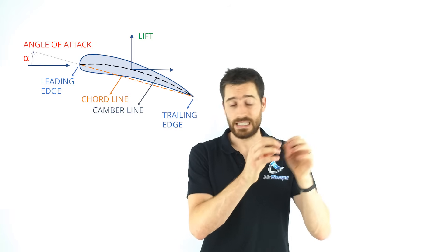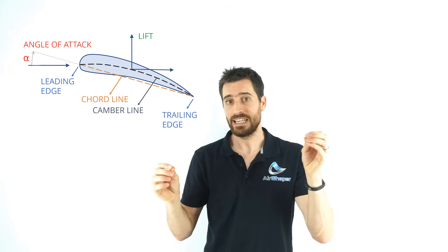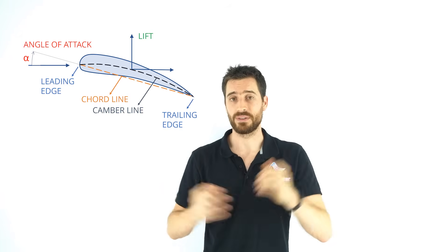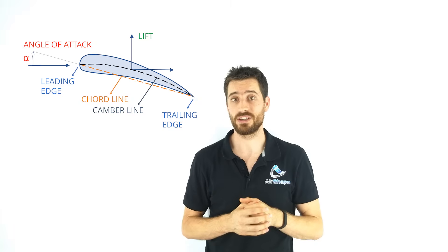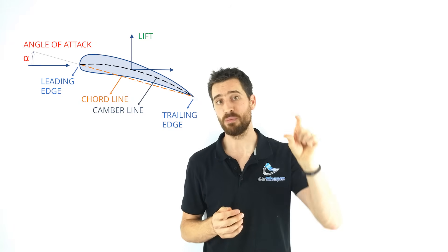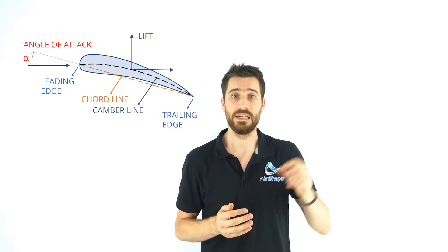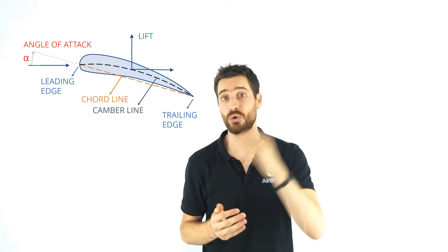The center line, the straight line connecting the leading edge to the trailing edge, is called the cord of the airfoil. The camber line, on the other hand, runs nicely in between the upper and lower surface of the wing, indicating the center line, which is not always straight.